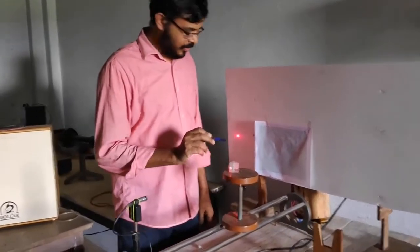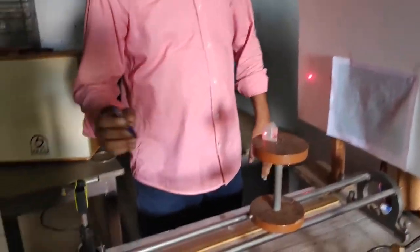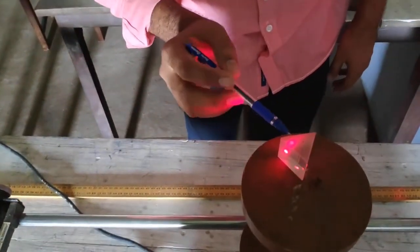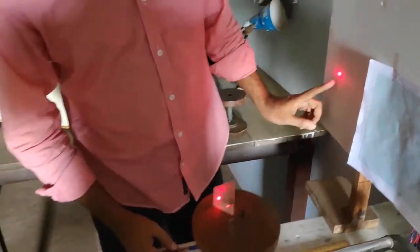This is the prism and this is the white screen. Now the laser beam is incident on the prism and it gets refracted and bent towards the base of the prism, and the image you can see in the screen.